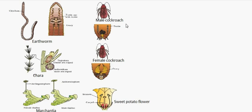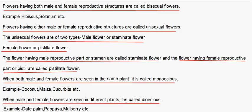In cockroach, you can see a separate male cockroach and female cockroach. In the sweet potato flower, we can see the male reproductive part, the stamen, and the female reproductive part, the carpel, in the same individual. Flowers having both male and female reproductive structures in the same flower are called bisexual flowers.